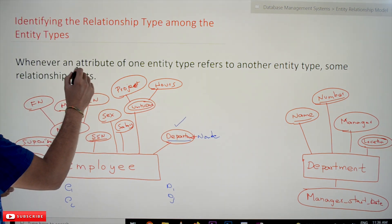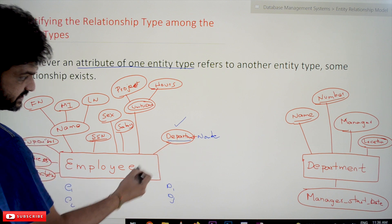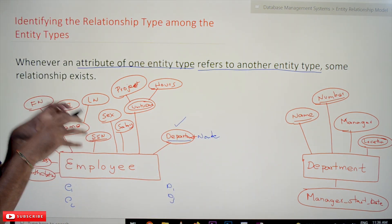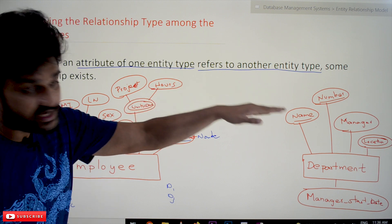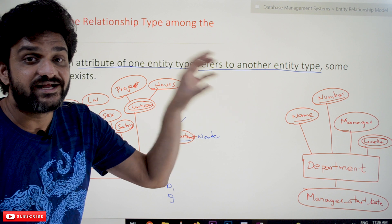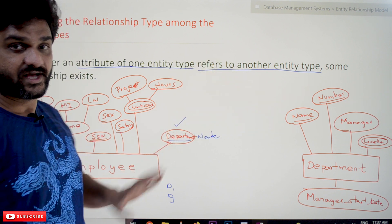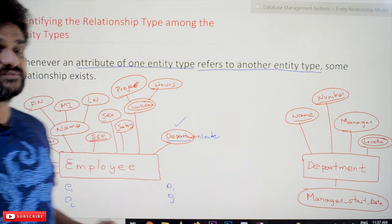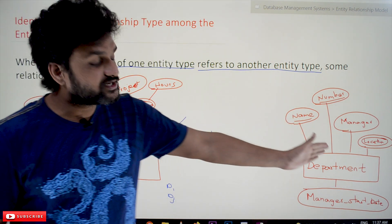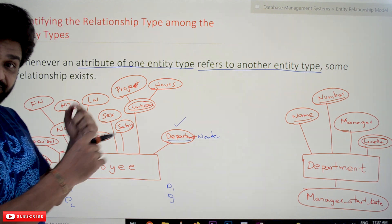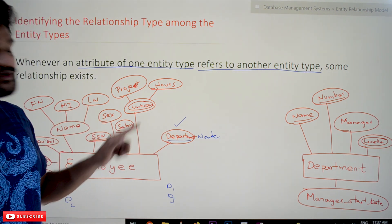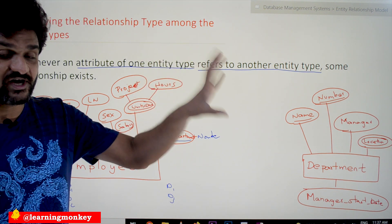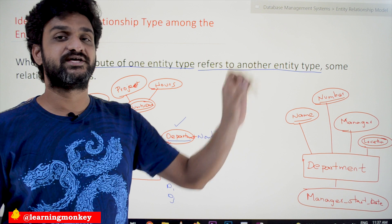The definition states: an attribute of one entity type refers to another entity type — so the department attribute in employee is referencing the department entity type. If any such attribute exists in an entity type that references another entity type, then a relationship exists. The relationship between these two is: employee works for department. So 'works for' is what we call a relationship type.